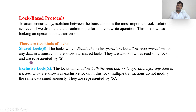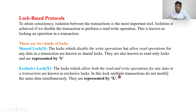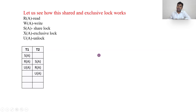Shared lock disables write operations but allows read operations for any transaction — it is also known as a read-only lock, represented as S. Exclusive lock, represented as X, allows both read and write but only for one transaction at a time. In an exclusive lock, multiple transactions cannot lock simultaneously, whereas multiple transactions can hold shared locks. Shared lock does not allow write; exclusive lock does not allow multiple concurrent holders.